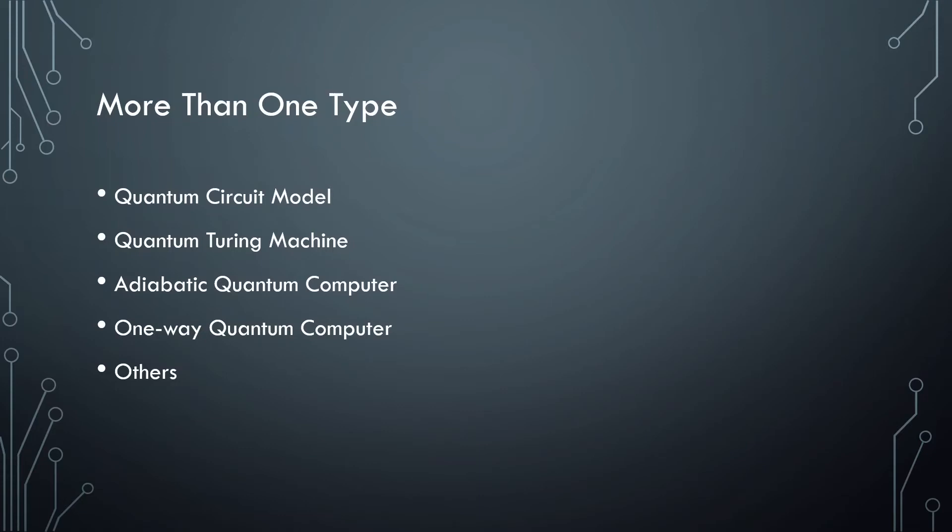There are actually more than one type of quantum computer architectures. I have currently been explaining the quantum circuit model, which I will continue to explain after this slide. I've just listed a few of them. The quantum circuit model is what's normally implemented today.